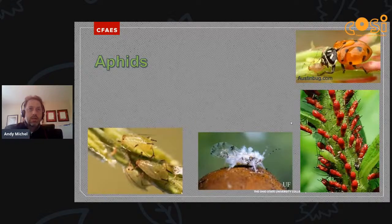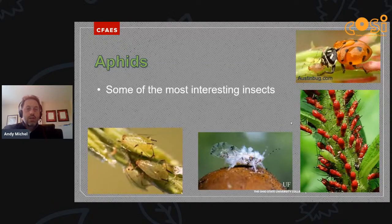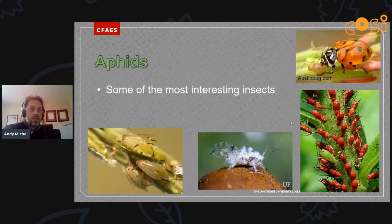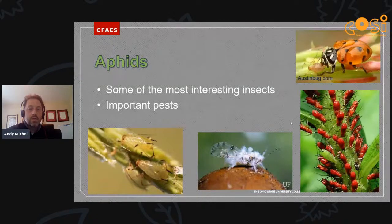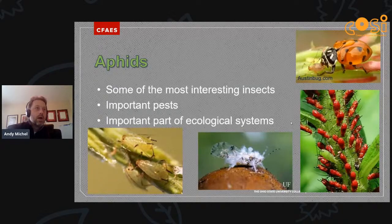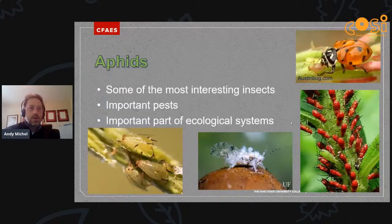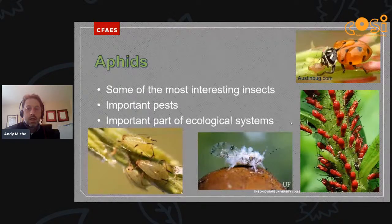I hope this presentation has convinced you that aphids are some of the more interesting insects. They have interesting and diverse life history characteristics and a diversity of life strategies. They are important pests, especially on crops important to Ohio and to homeowners' backyard gardens, and can transmit a lot of disease. But aphids are also an important part of ecological systems — without aphids, we might not have lady beetles. Aphids are an important food source for many predatory insects that can control not only aphids but many other pests as well.